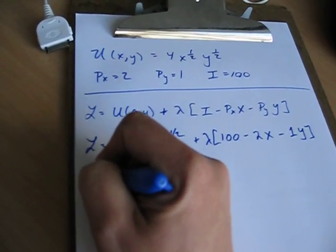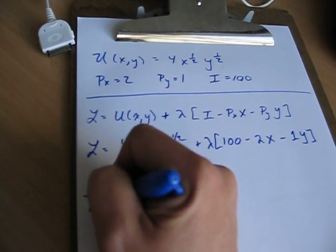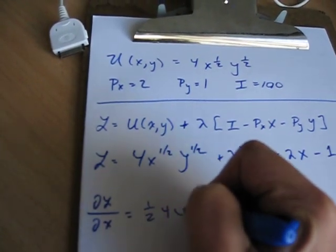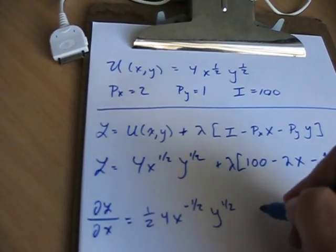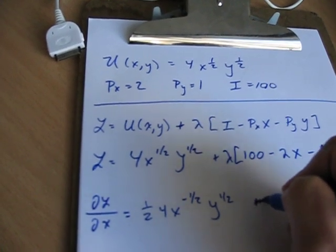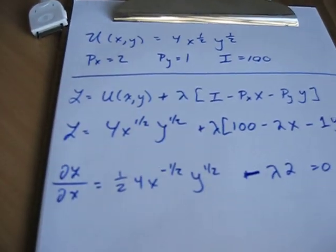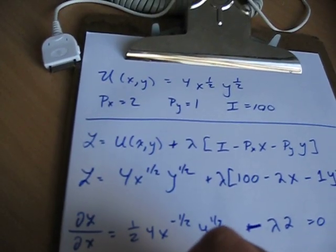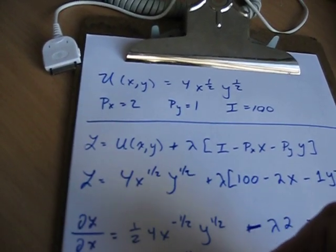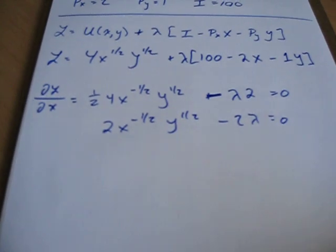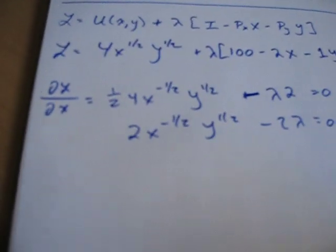So first thing we have is partial Lagrangian with respect to x. What do we have here? 1 half times 4, x to the minus 1 half, y to the 1 half, plus rather minus lambda times the price of x, which is 2, is equal to 0. So we have then 2x to the minus 1 half, y to the 1 half, minus 2 lambda is equal to 0. So that's the first first order condition.